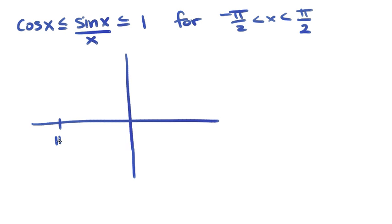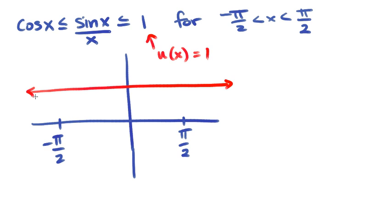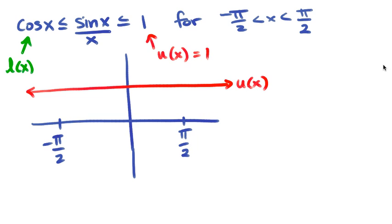So I am just going to sketch this from negative π/2 to π/2. I've got an upper function which is equal to 1. The limit is very easy to figure out on that one. And I have a lower function which is the cosine graph.